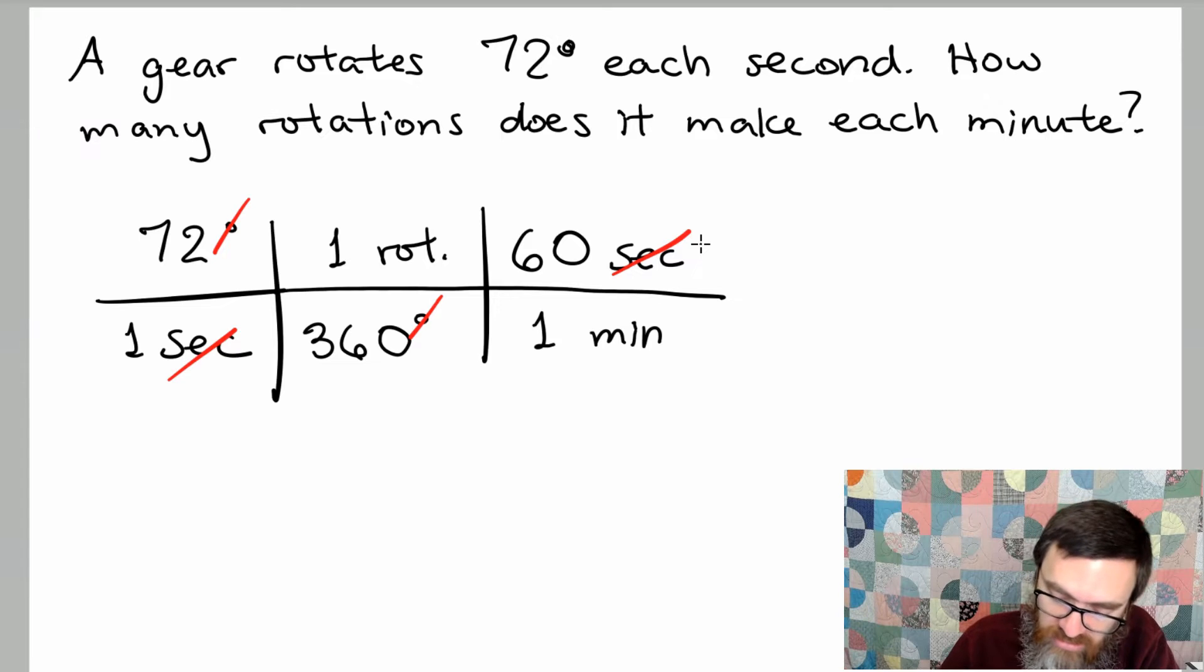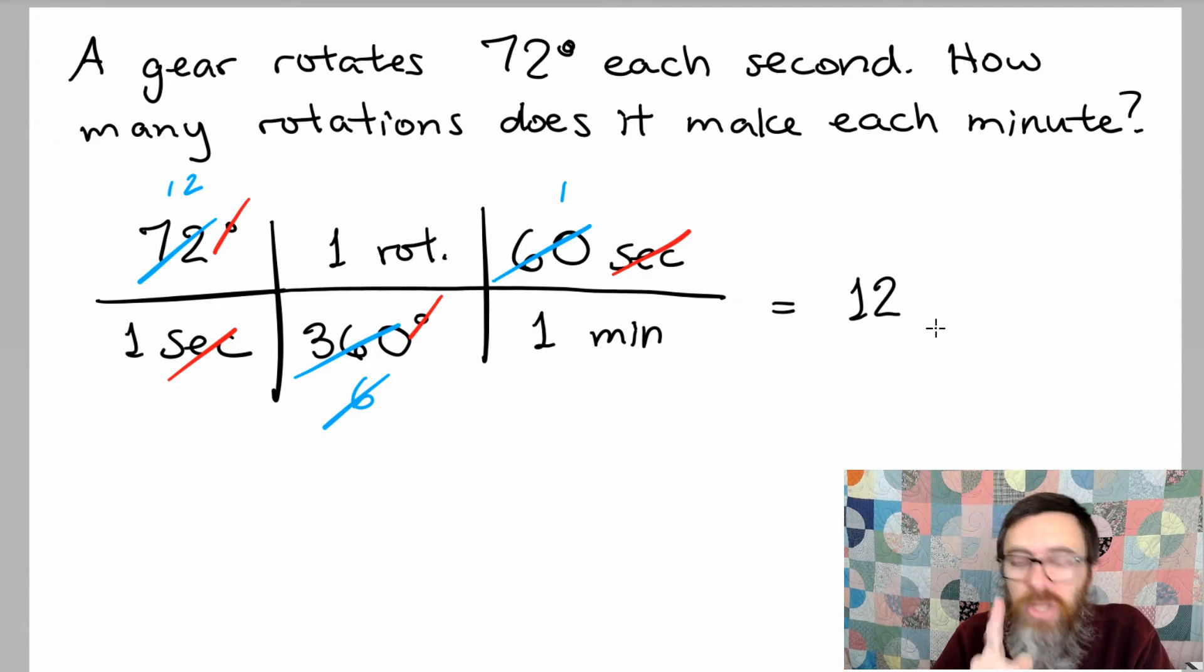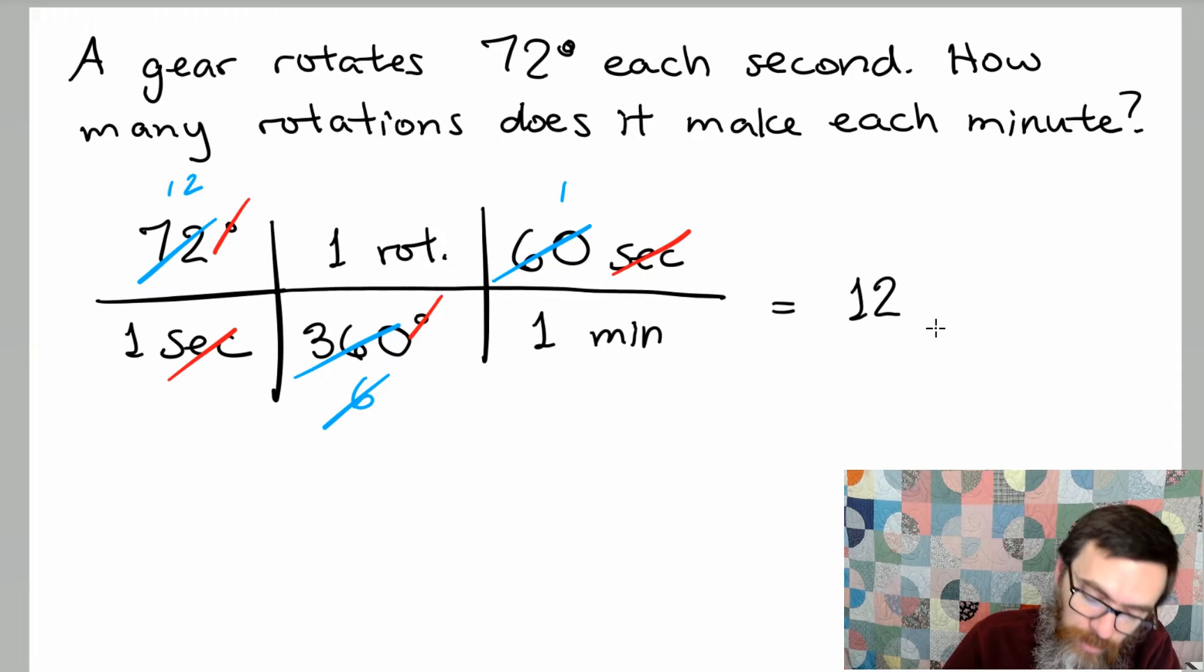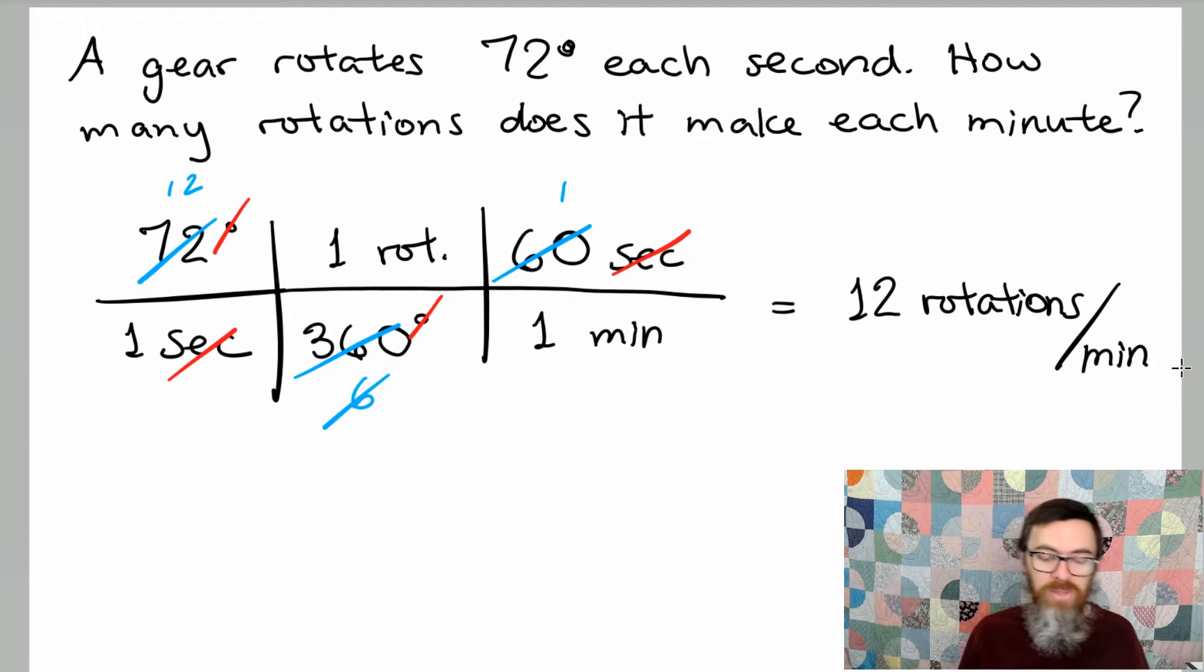And then the rest of this is just really you can use the calculator but some of the stuff you can actually simplify. Because 60 goes into 60 and 360 so it goes at once and 6 times and then 6 goes into 72 twelve times. So the answer is not just 12 but look at your units. What units are left in the numerator? Rotations. What's in the denominator? Minute. So that means this gear would have 12 rotations for every minute.